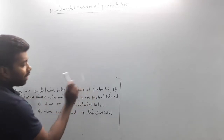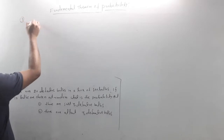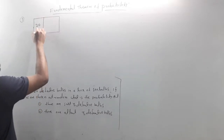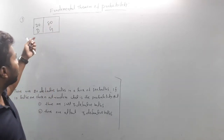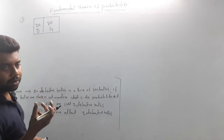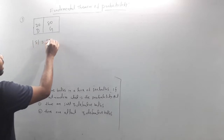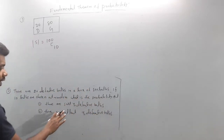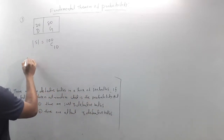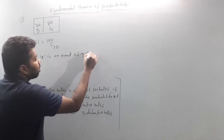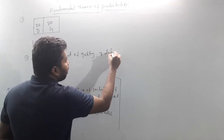The last question: there are 20 defective balls in a box of 100 balls. Obviously there are 80 good balls. If 10 balls are chosen at random, the sample space mod is 100 C 10. Find the probability that there are exactly three defective balls. A is the event of getting three defective balls.